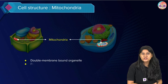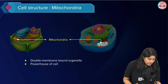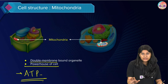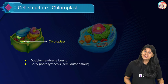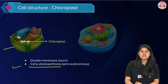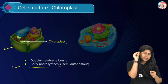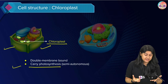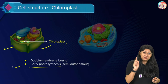Mitochondria is the powerhouse of the cell where ATP — the energy currency of the cell — is synthesized. It is a double membrane-bound organelle. The ATP produced provides the energy for our body to perform various functions. Chloroplast is another double membrane-bound structure found only in plant cells. It carries out photosynthesis using the pigment chlorophyll, which gives plants their green color. Both mitochondria and chloroplasts have their own DNA and can produce their own proteins.